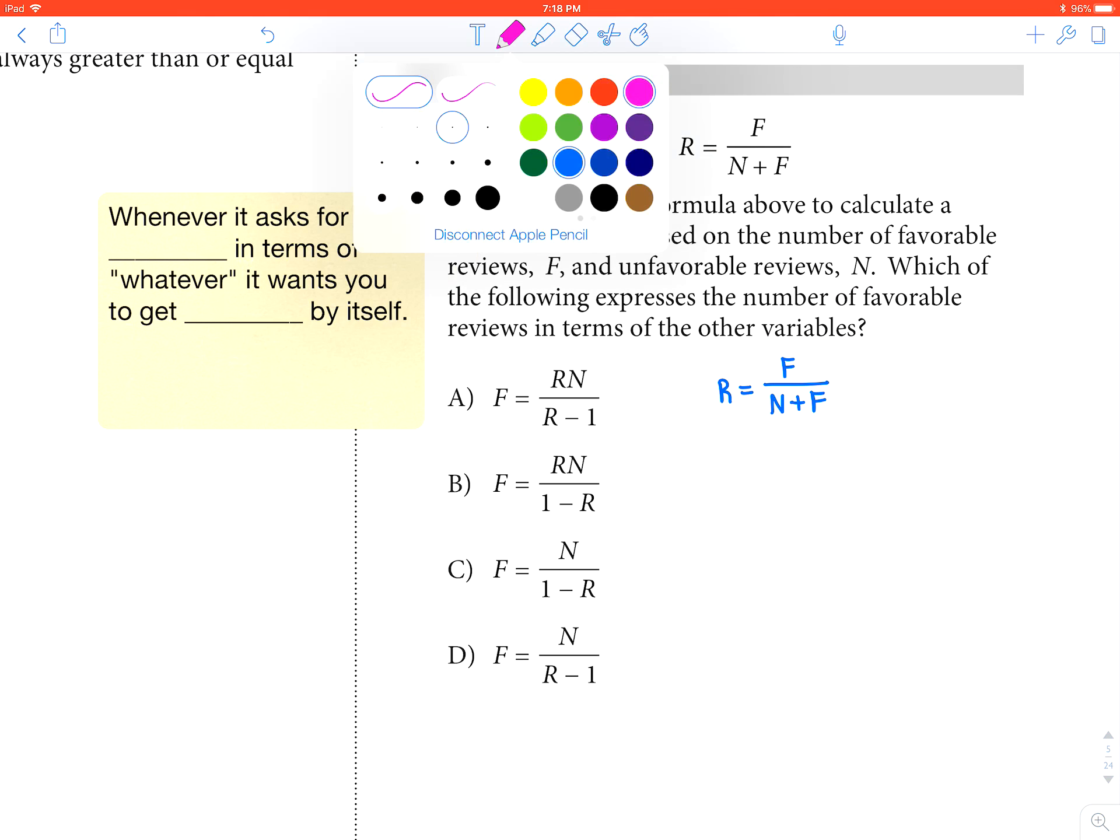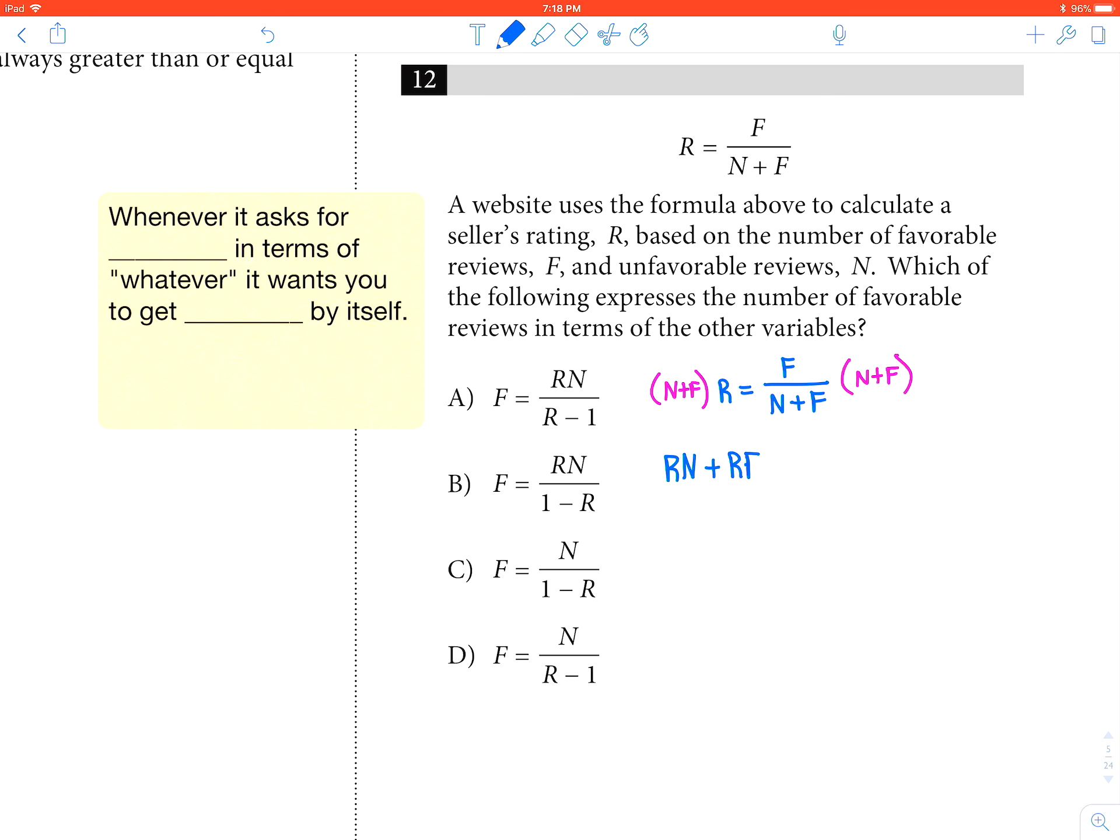So what we're going to do is multiply the top and bottom by N plus F on both sides. And what we get is RN plus RF equals F.